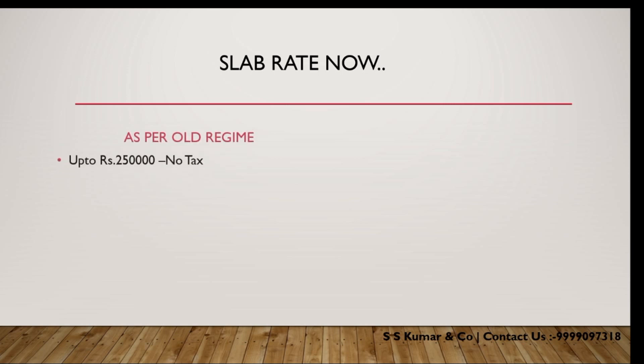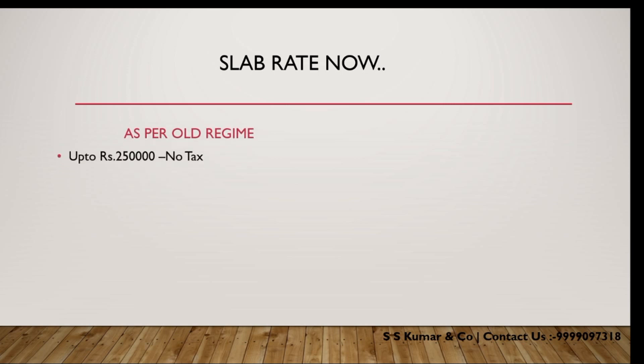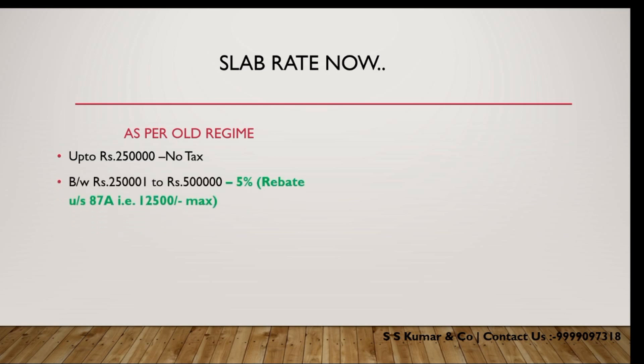If I first talk about the old regime: if your income is up to 2,50,000 annually, then there is no tax. If your income is 2,50,000 to 5,00,000, then your slab rate is 5%. But here there is a rebate under Section 87A available.